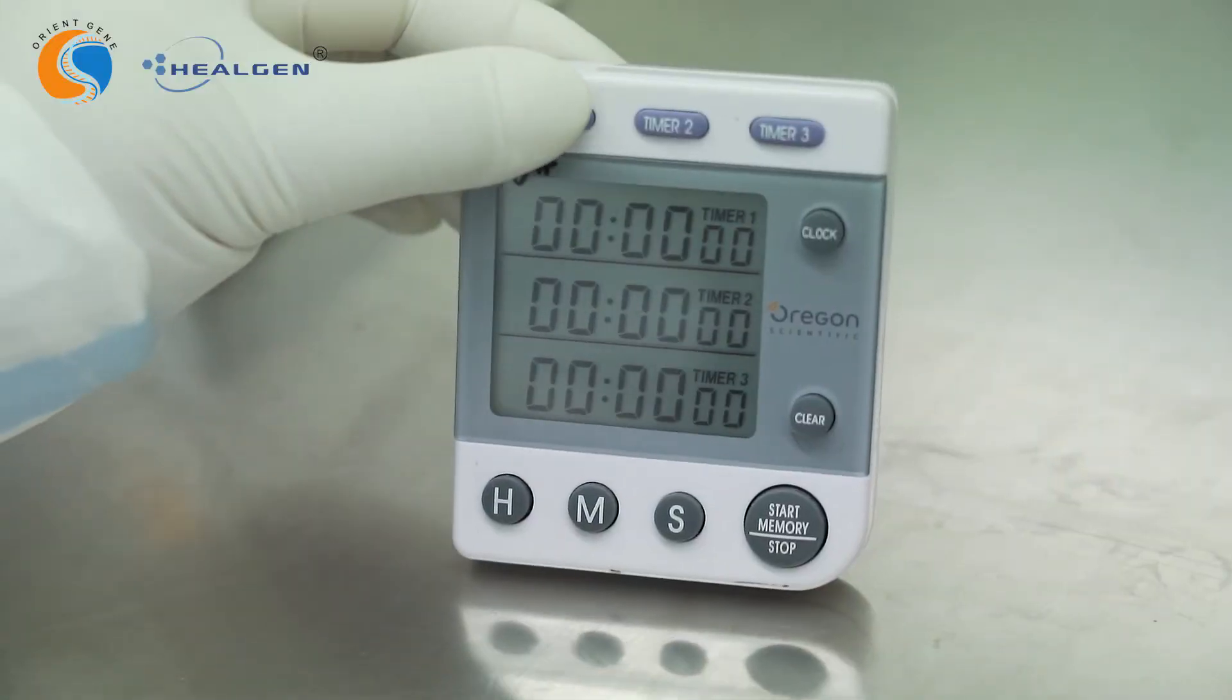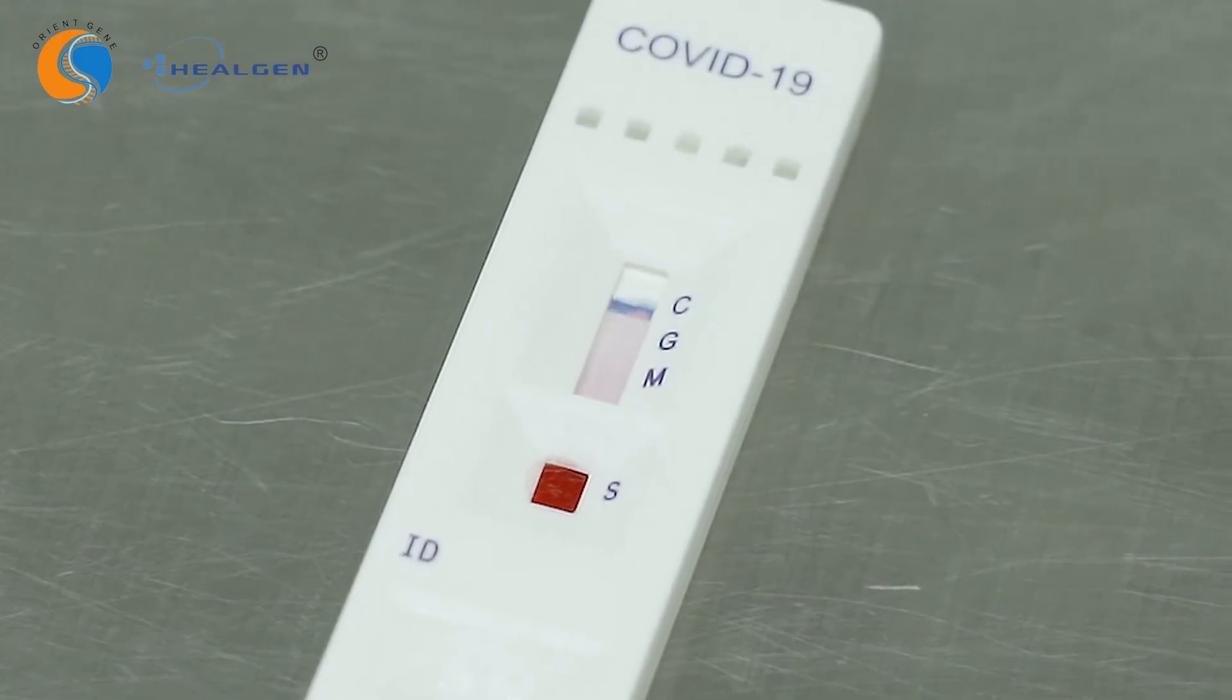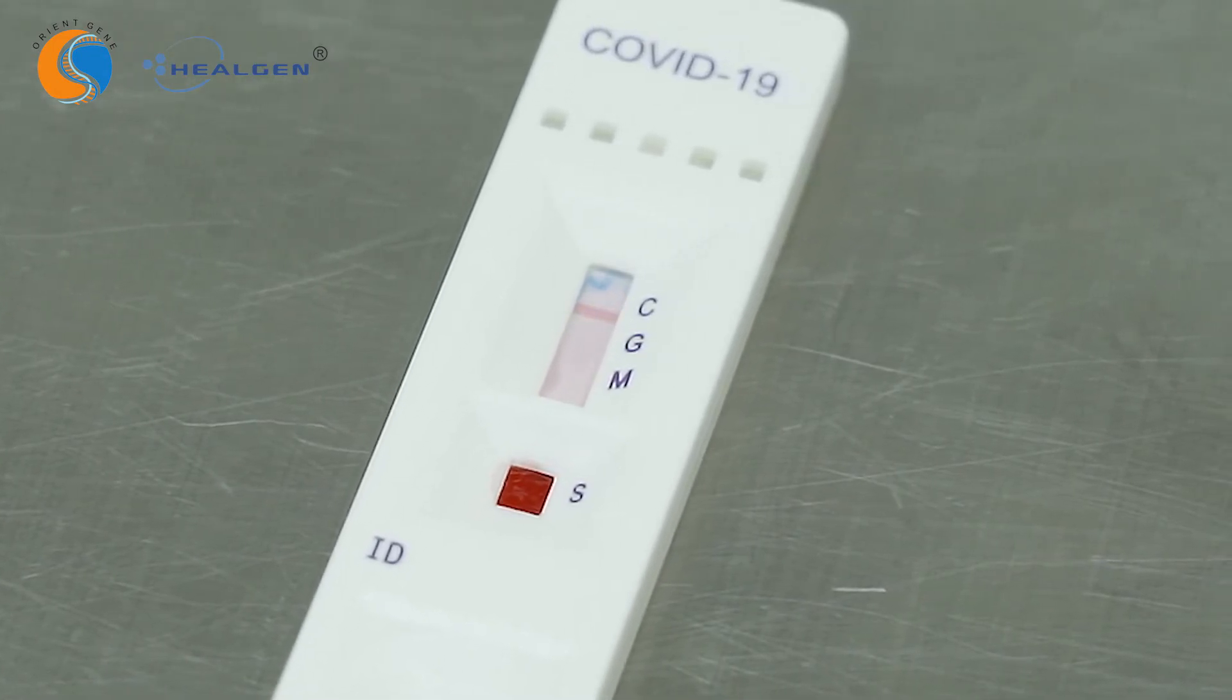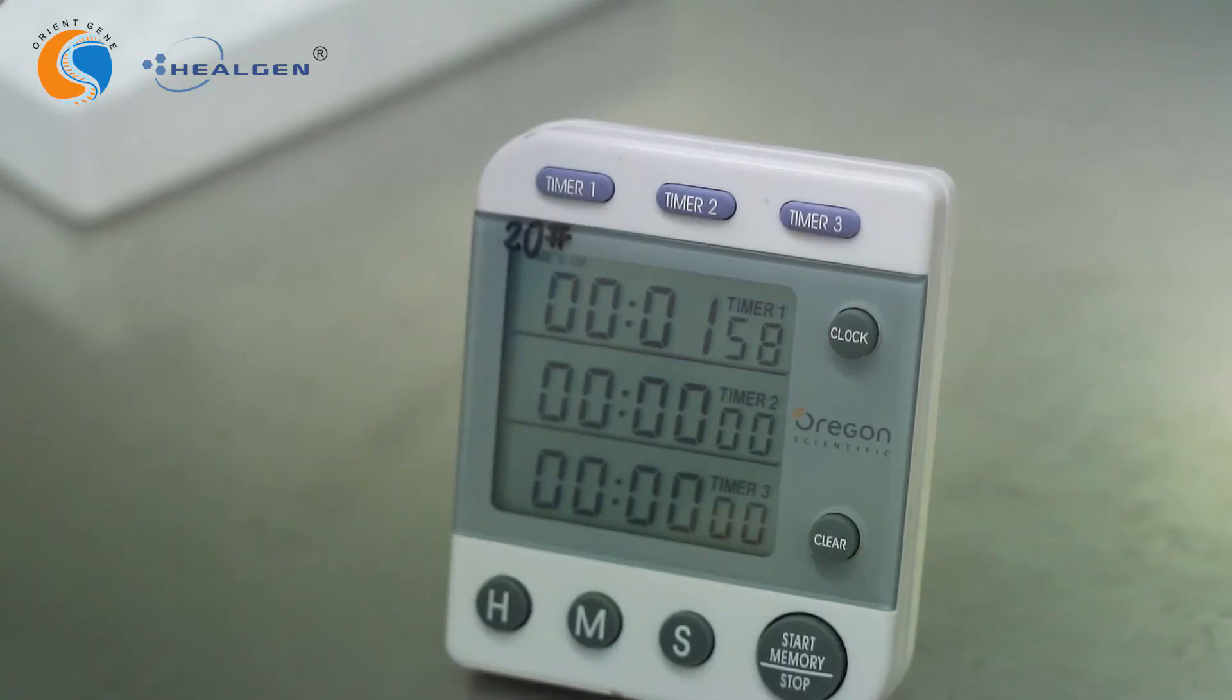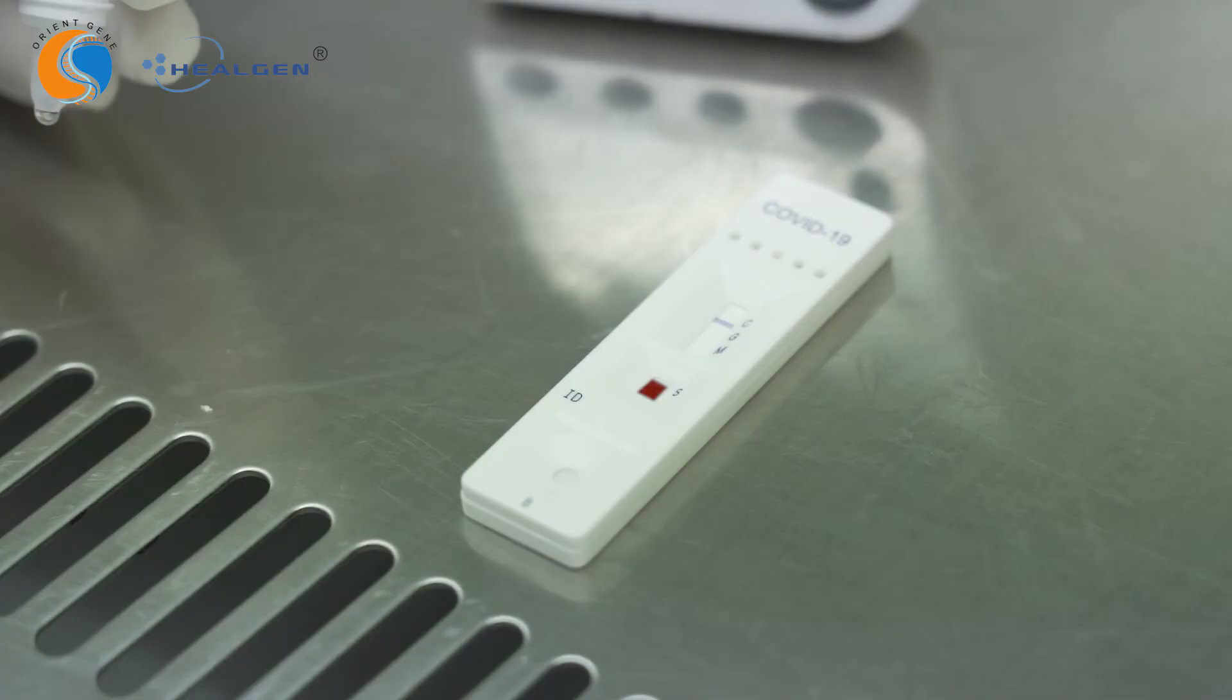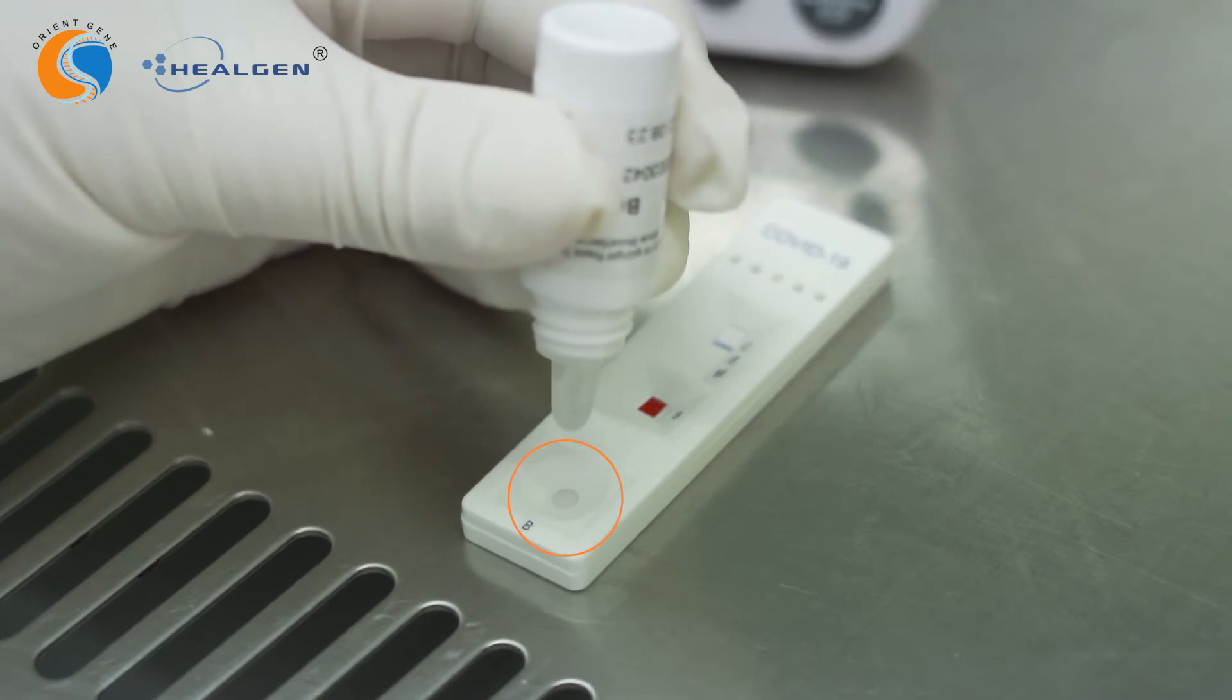Start the timer. If after two minutes the sample has not moved across the test window or if blood is still present in the sample well, add one additional drop of buffer to the buffer well.